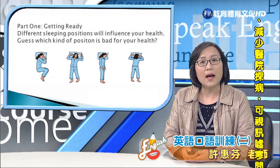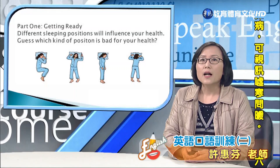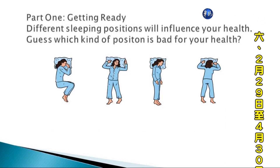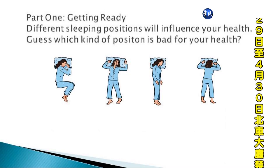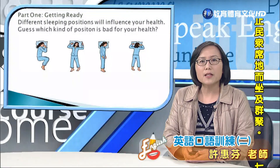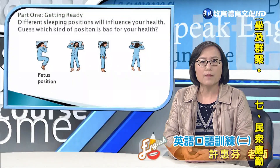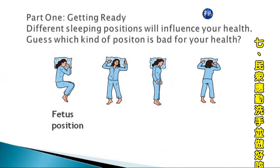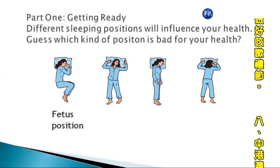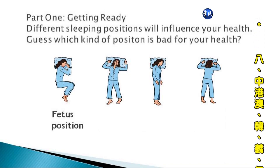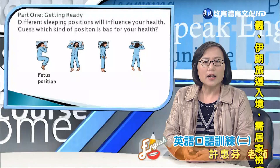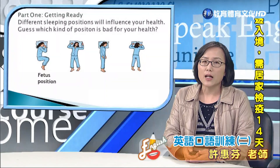Which kind of sleeping position is bad for your health? 不同的睡覺姿勢會影響我們的健康，你要不要猜猜看哪一種是對我們健康有害的？我們將會在文中探討這個問題。The first position is fetus position. In this position, you sleep on the side, and your body is curled up like a fetus in a mother's womb. 這叫做胚胎形，你很像一個胚胎在母體的子宮內。